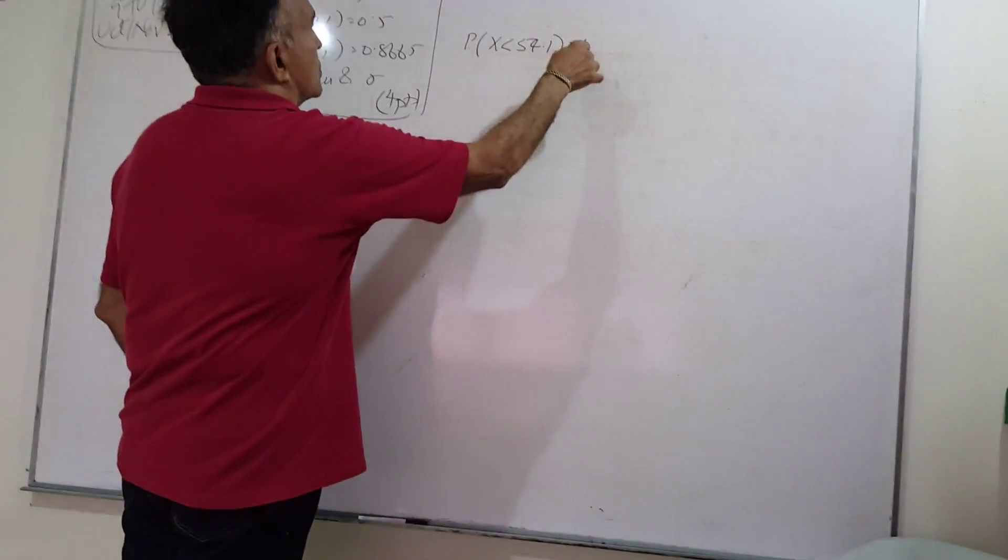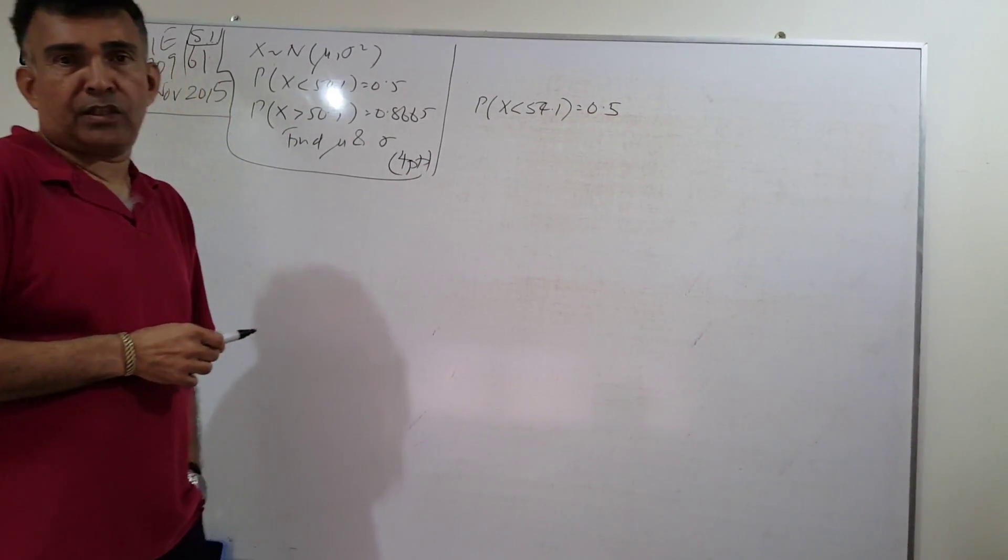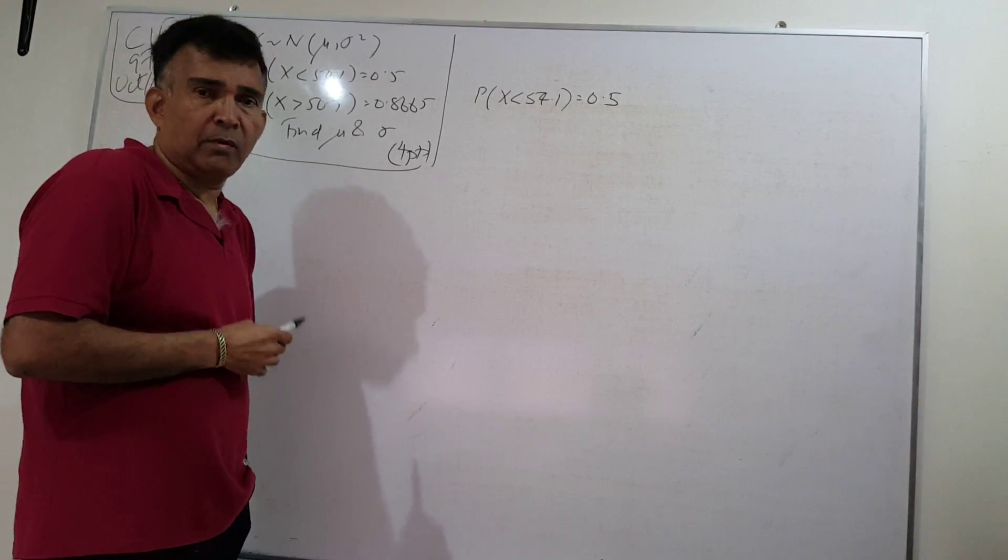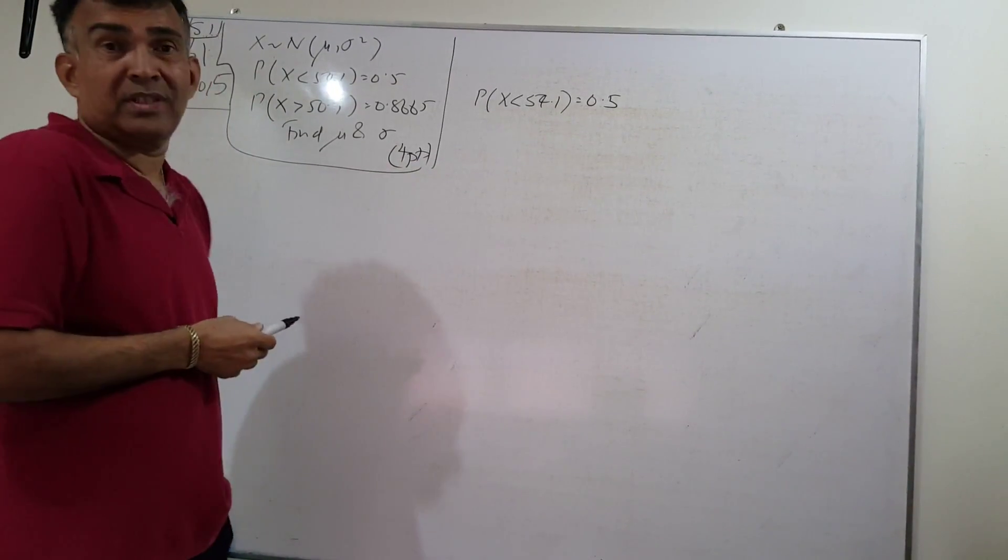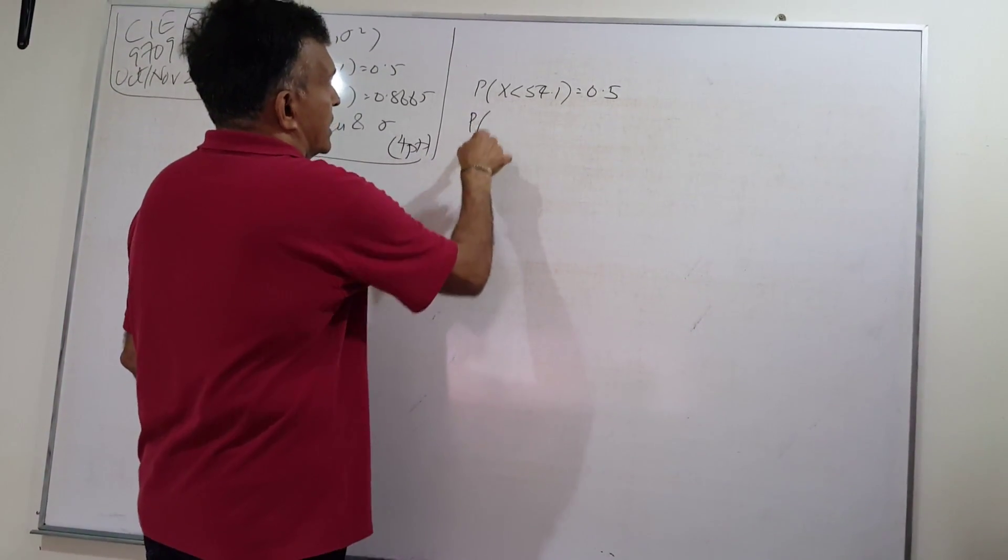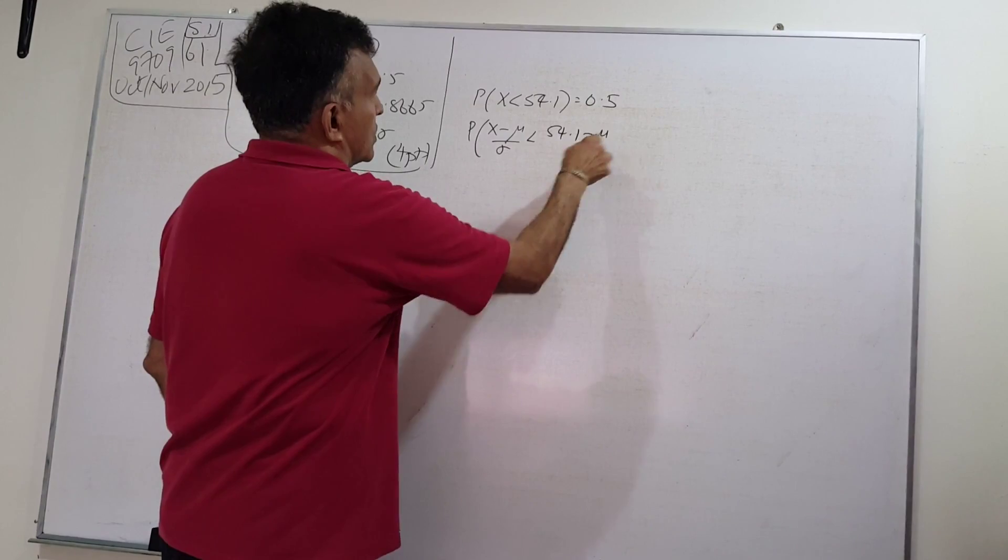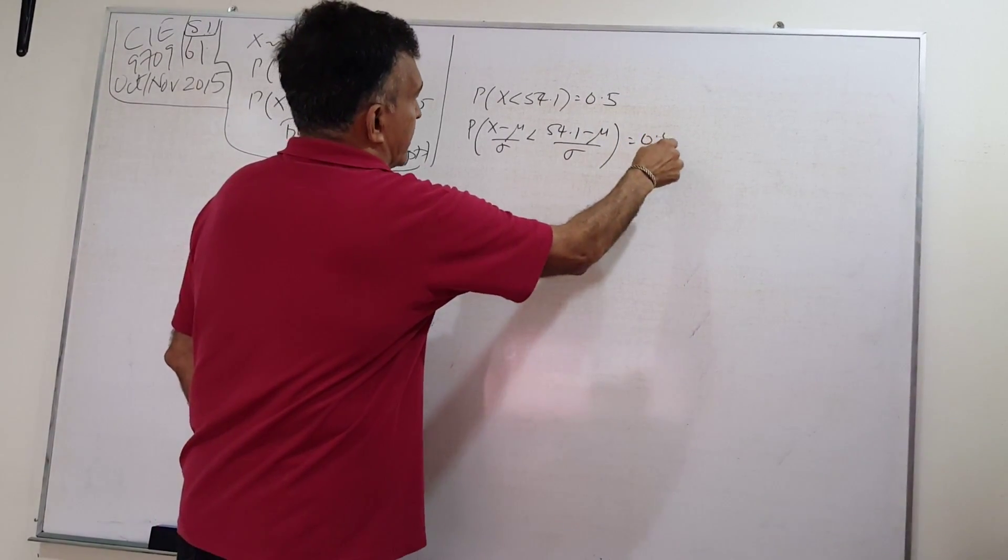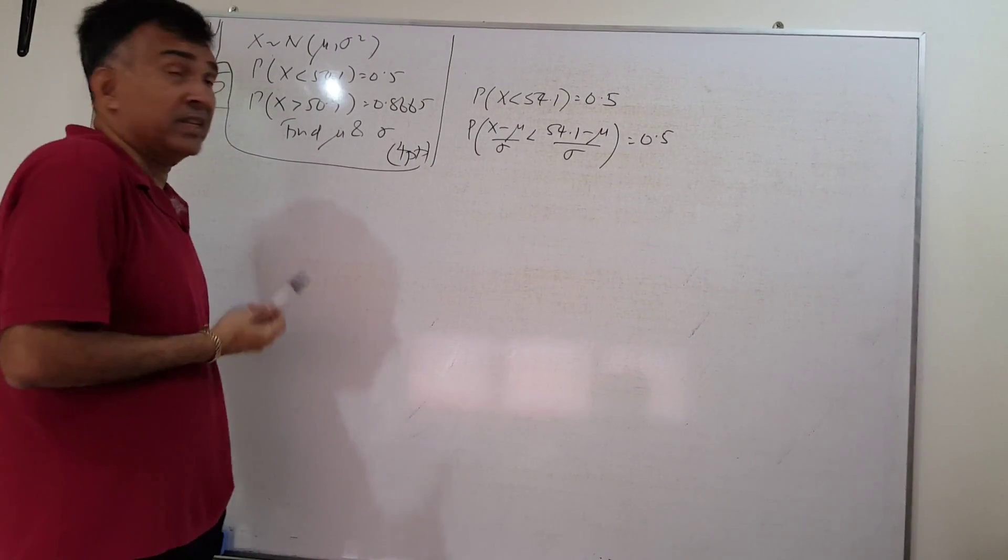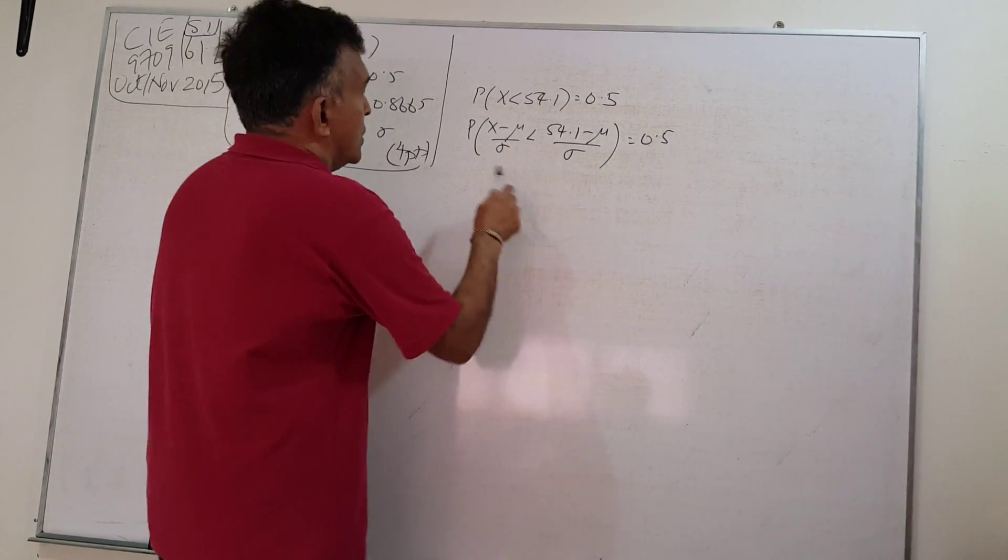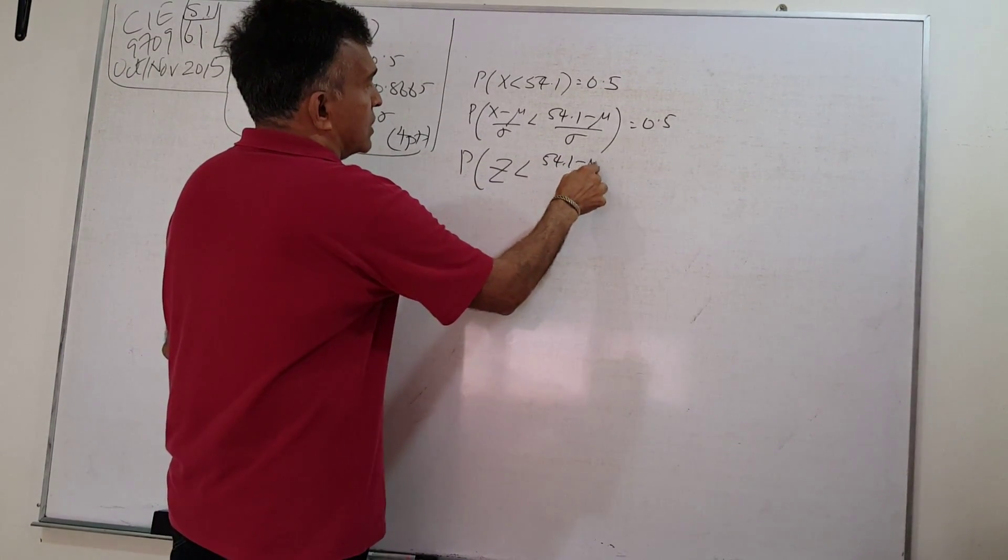We have to transform our X to a Z, the standard normal variable. Let's transform X to Z: X minus μ over σ less than 54.1 minus μ over σ equals 0.5. So I'm going to write Z now: Z less than 54.1 minus μ over σ equals 0.5.